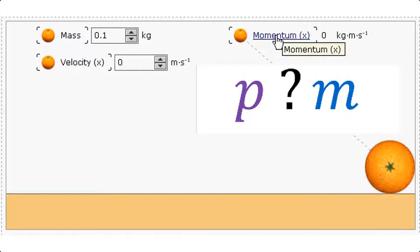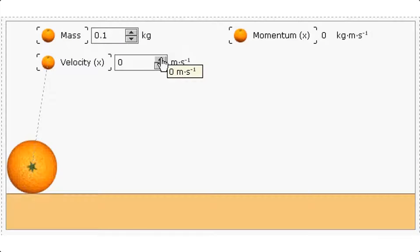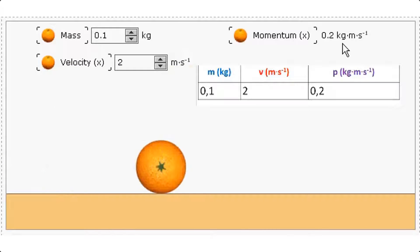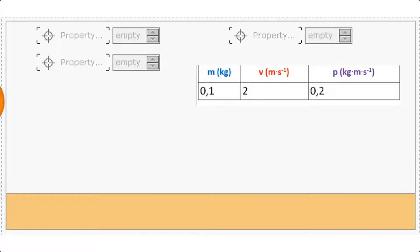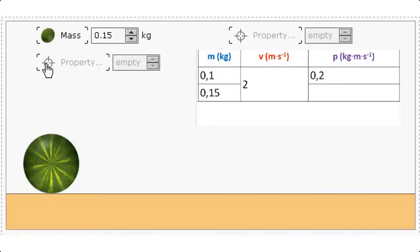What about the relationship between mass and momentum? Let us remind ourselves about the reading we saw earlier. Let's say when the velocity of the orange was 2 meters per second, the momentum was 0.2 kilogram meter per second. And now let's repeat this with a heavier fruit. Instead of using an orange let's have a watermelon. And let's say that this watermelon's mass is 0.15 kilograms which is heavier than the orange.